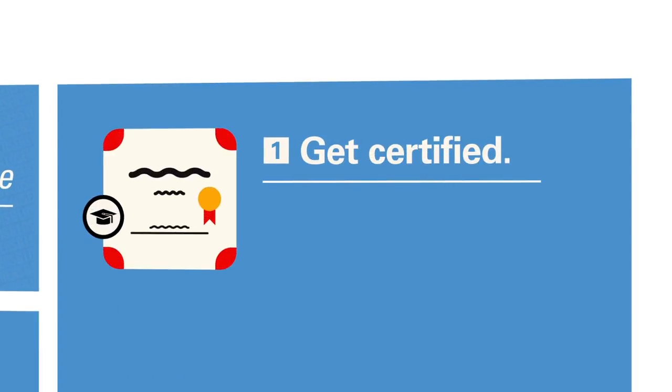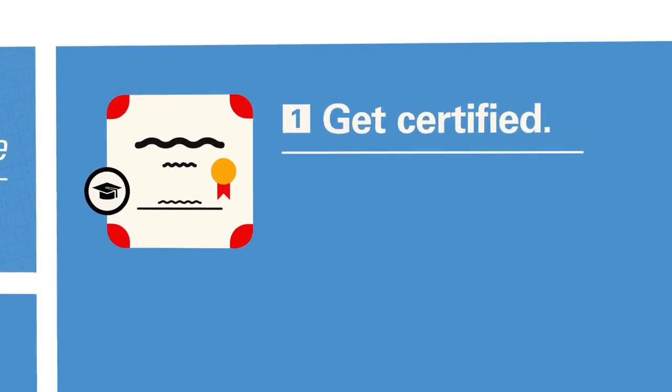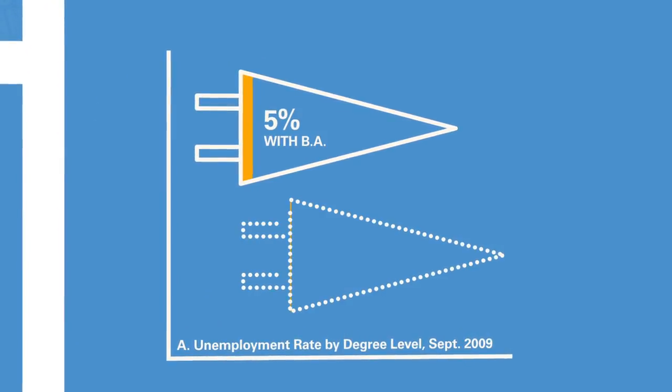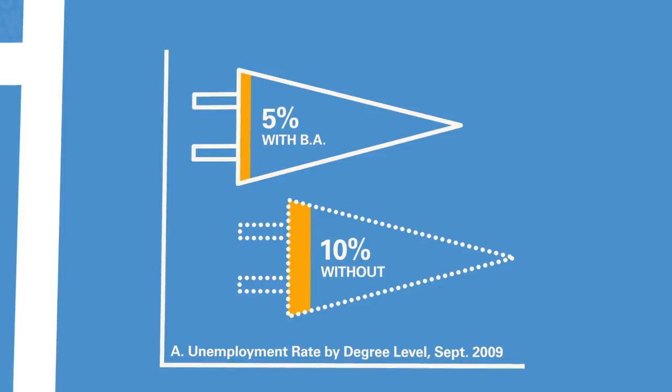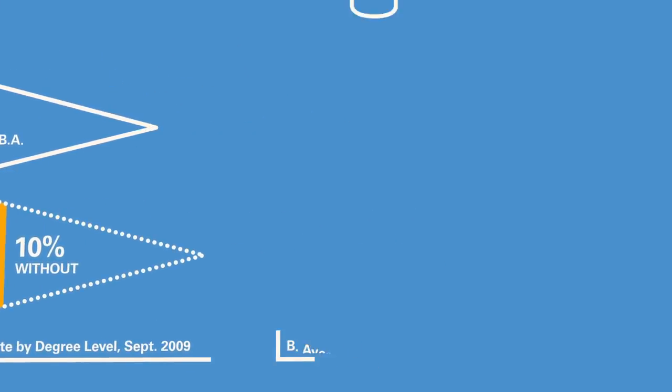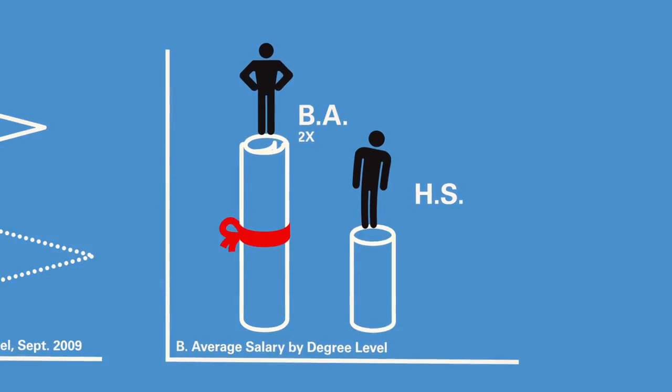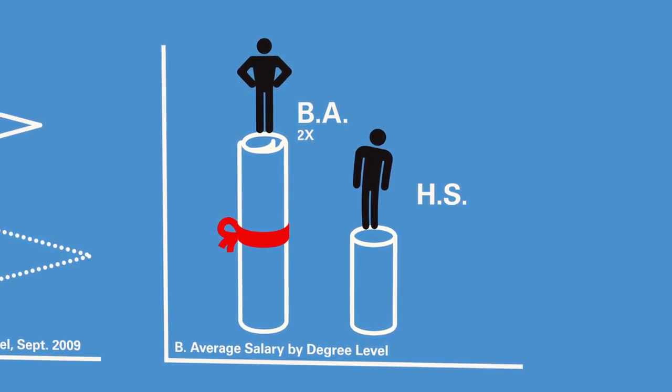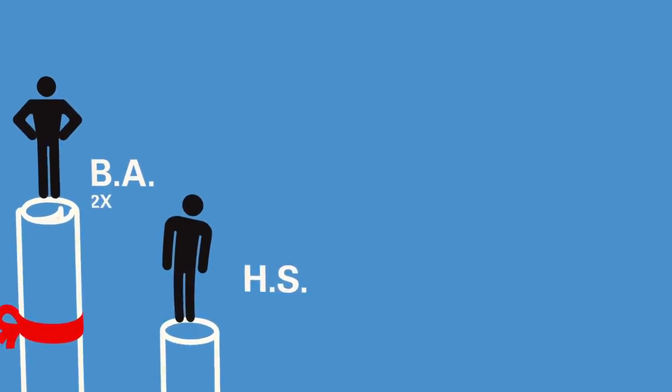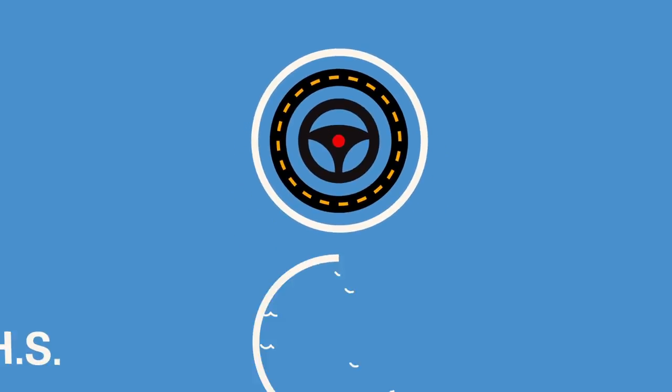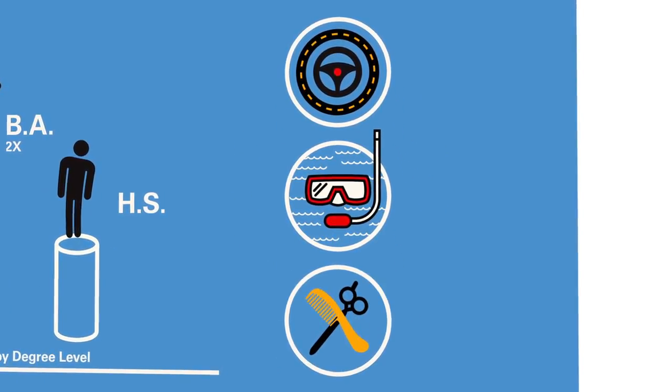One, get certified. In the depths of the Great Recession, college grads enjoyed half the unemployment rate of high school graduates. Over the course of your lifetime, college grads are going to make an average two times what someone without a degree earns. If you can't find your way to college, then seek other certification, whether it's a class three driver's license, scuba certification, or a degree in cosmetology.